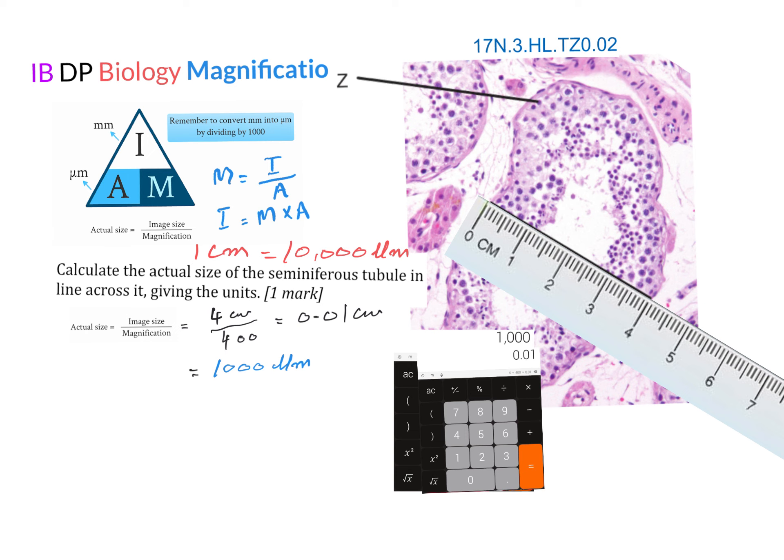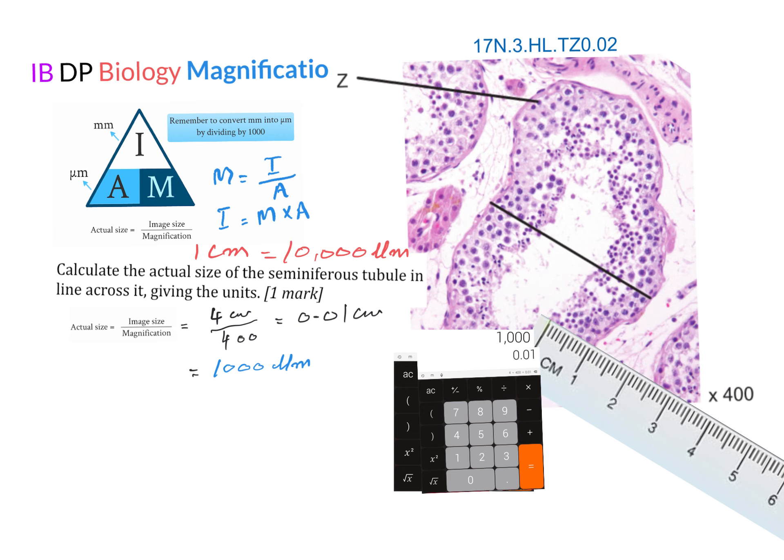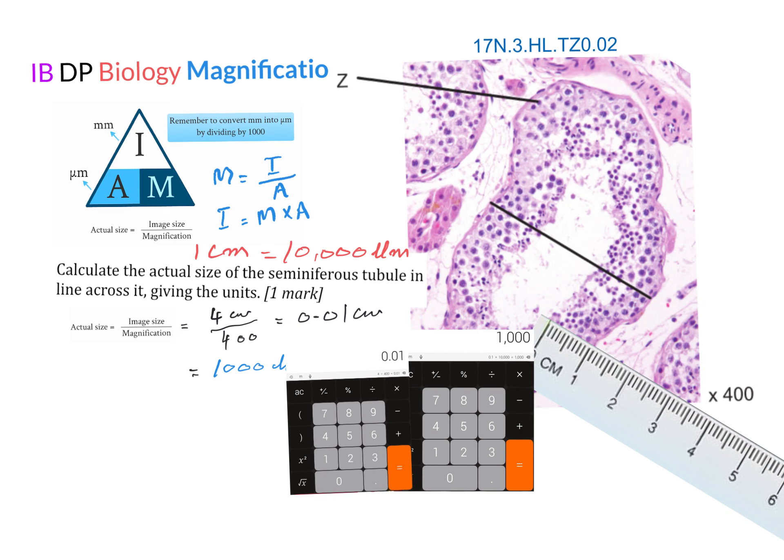Then the same way, we use a ruler and check it with the help of the ruler, which is around four centimeters. So I write four centimeters here, and then my magnification, which is given, is over there. Now I don't need the units for magnification.